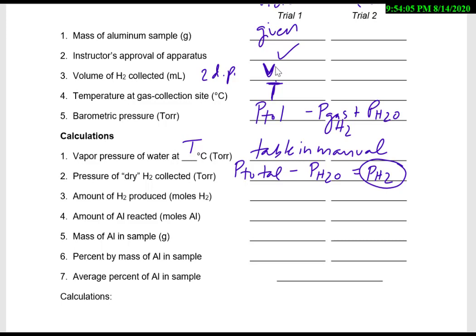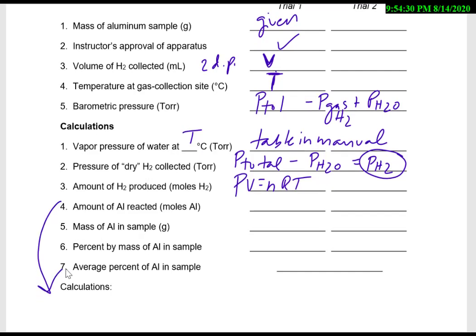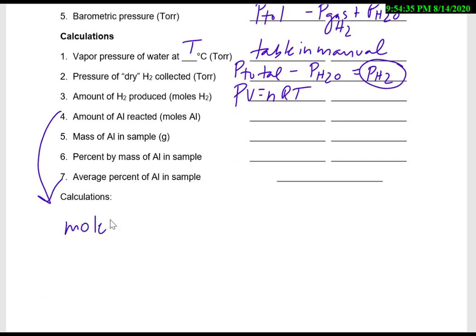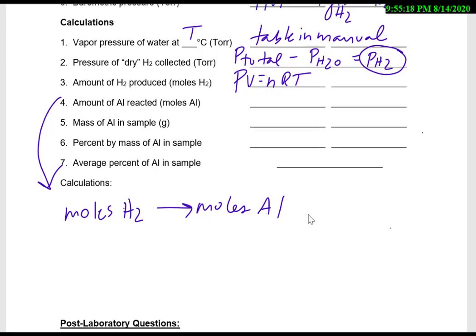So at this point what you'll see is we have our V, we have our T, we have our P, and so we can then find moles by using PV=nRT because if you'll notice we know P, we know V, we know R and T, so we can find N. And then once you know the amount of hydrogen that's produced, the moles of hydrogen, you can then come down and calculate from moles of hydrogen to moles of aluminum, and you'll want to look back to that mole to mole ratio, you know, moles of hydrogen to moles of aluminum, and that's that two to three mole ratio using the balanced equation. And then you can go on to grams of aluminum using molar mass. So that's how you can do calculations four and five.